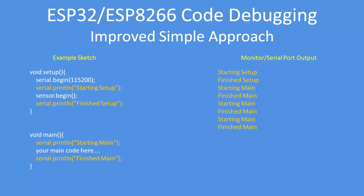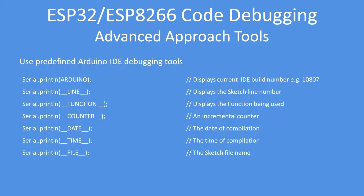Debugging code is not new — the need to debug has been around for a long time. So here are some of the functions predefined in the Arduino IDE. Arduino gives you the current IDE build state. Double-underscore LINE double-underscore displays the sketch line number, so it tells you in the serial port where you are in the program. Double-underscore FUNCTION double-underscore is the function that's currently being called.